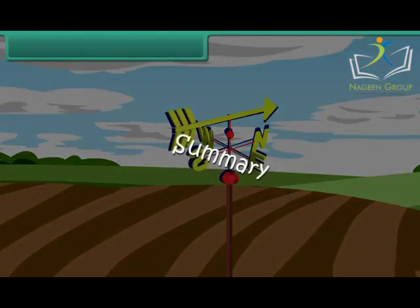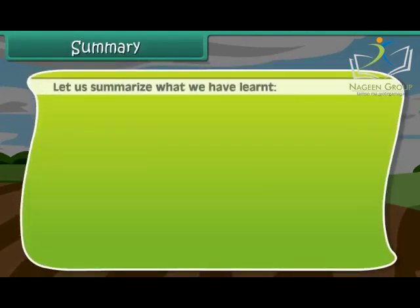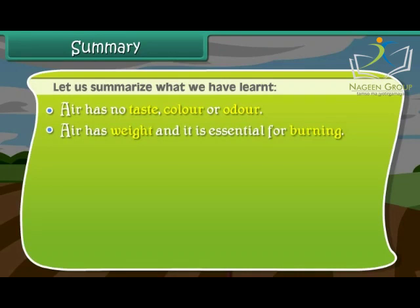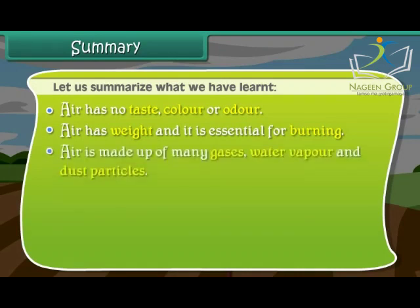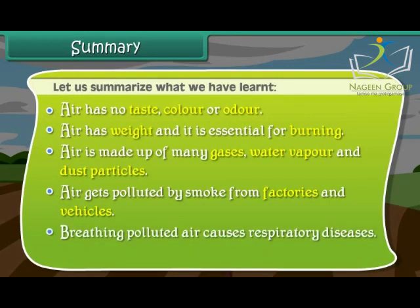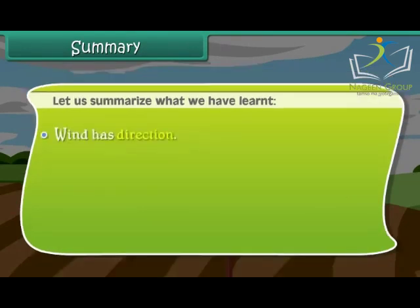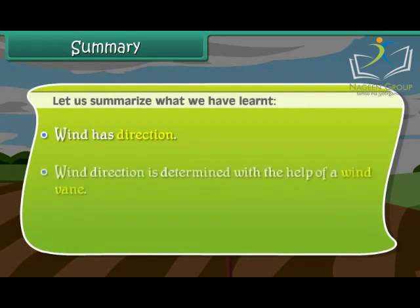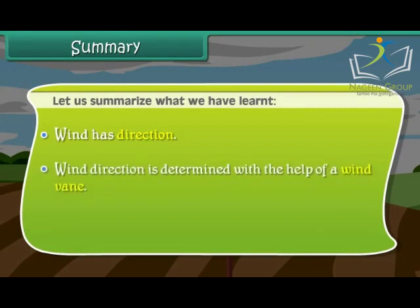Summary. Let us summarize what we have learned. Air has no taste, color, or odor. Air has weight and it is essential for burning. Air is made up of many gases, water vapor, and dust particles. Air gets polluted by smoke from factories and vehicles. Breathing polluted air causes respiratory diseases. Moving air is known as wind. Wind has direction, which is determined with the help of a wind vane.